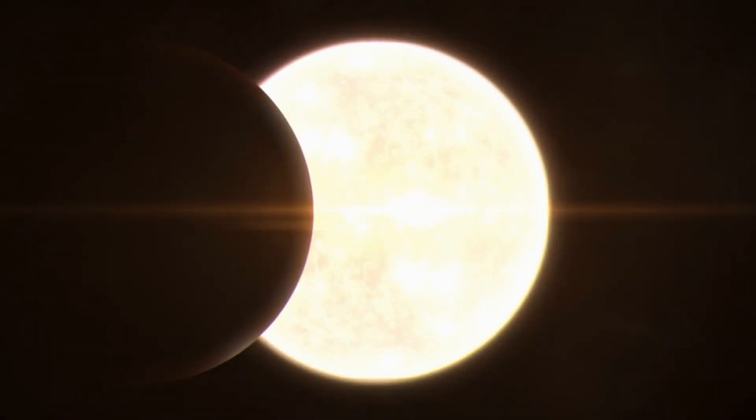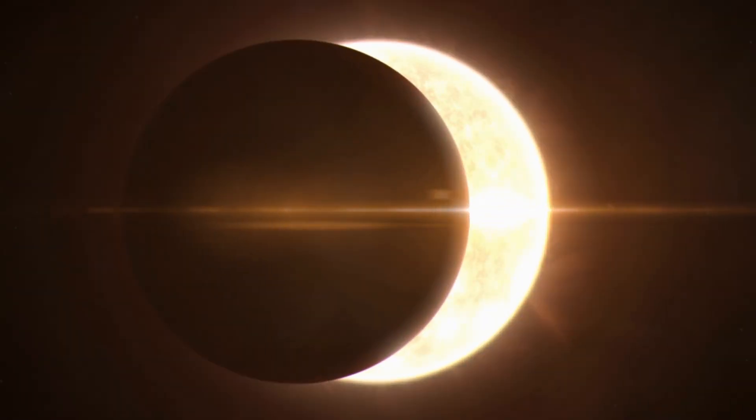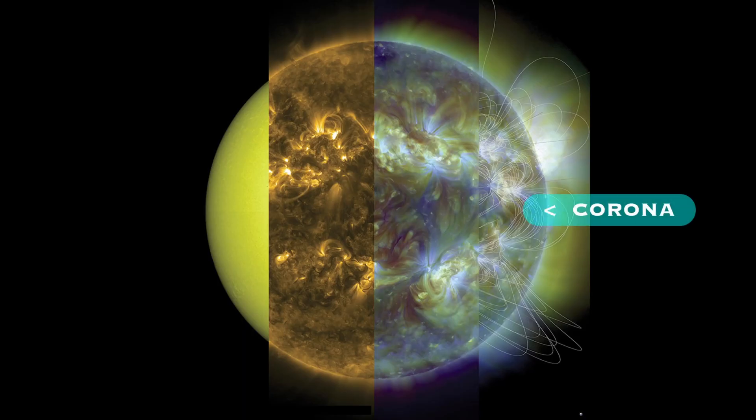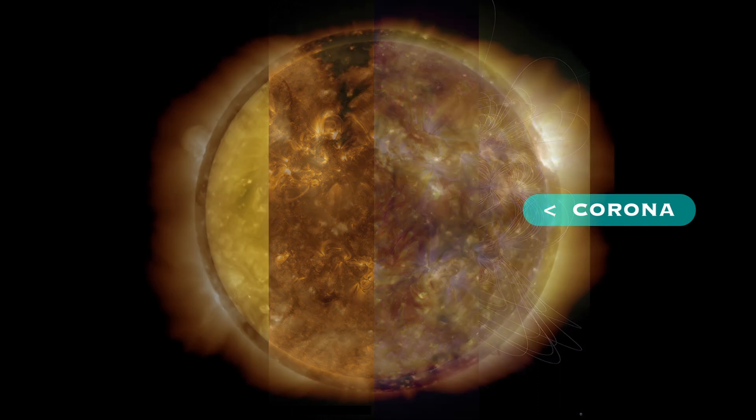The corona is less dense than the chromosphere, and because it is 1 million times less bright than the photosphere, you can only see it from Earth during a total eclipse. The corona can be seen in the far image to the right, taken with an ultraviolet light filter showing objects at 2 million Kelvin. Here you can see the high energy streamers of plasma that can extend for millions of kilometers out into space.